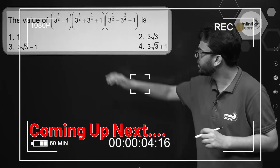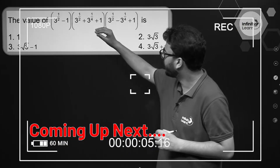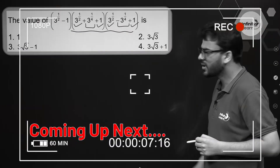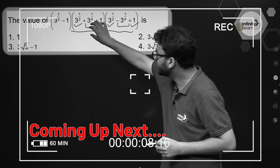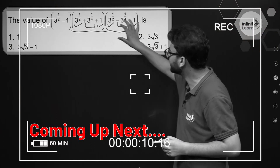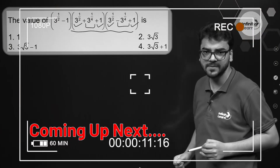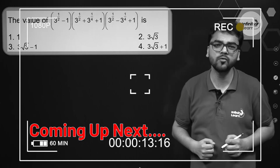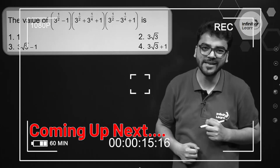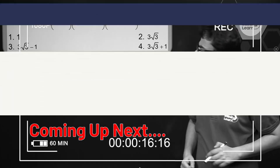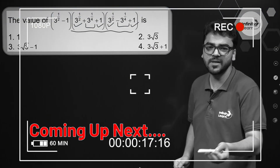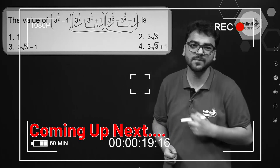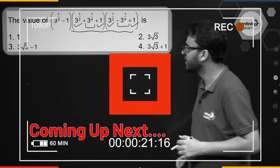We have a question in which we have to find the value of this expression. Can I not say that these parts are of the form a plus b and a minus b? So basically we have to use algebraic identities over here. Let's use the formula: a plus b into a minus b equals a square minus b square.